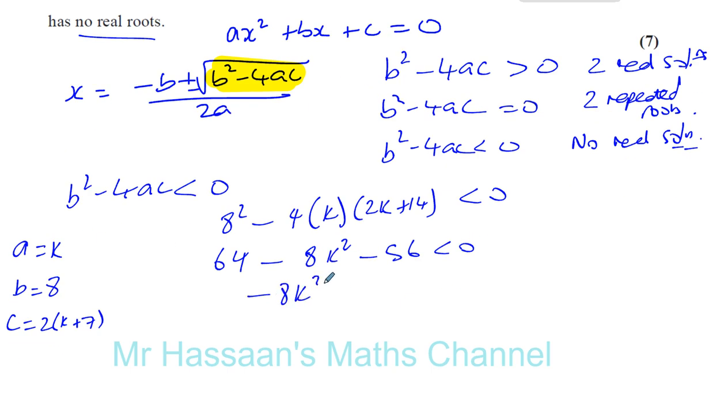So now we have a negative 8k squared. So you've got to be careful, a negative 8k squared. And you're going to have minus 56k, by the way, minus 4k times 14. You're going to have minus 56k, and you're going to have plus 64 is less than 0.